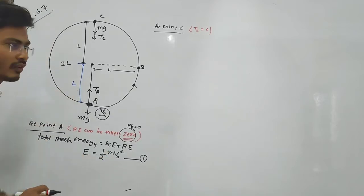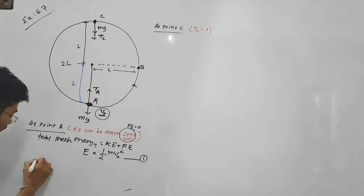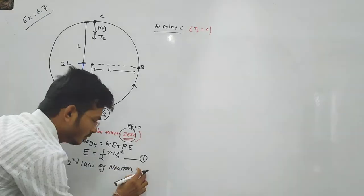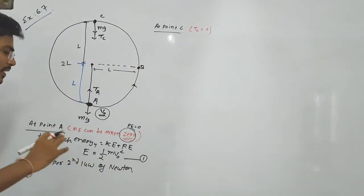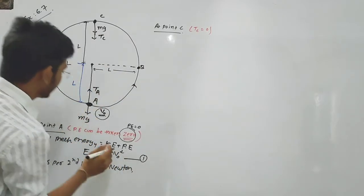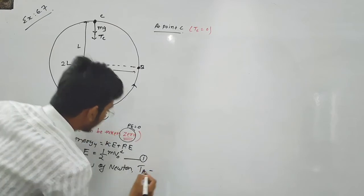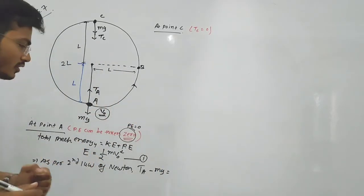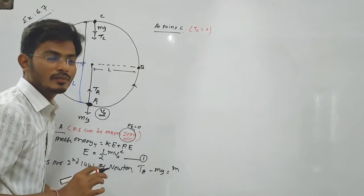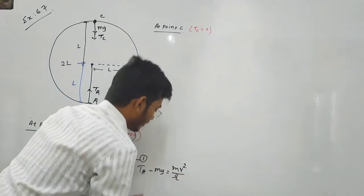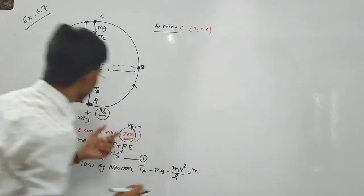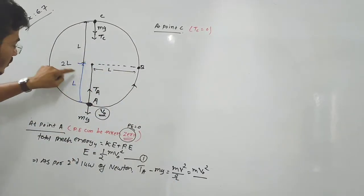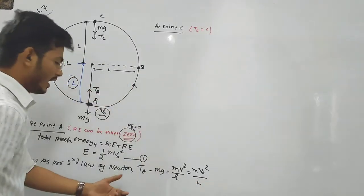Now, applying Newton's second law for circular motion: the net upward force minus the downward force equals the centripetal force. So the net force equals mv² divided by r. In our case, r equals L, giving us equation number 2: T minus mg = mv₀² divided by L.